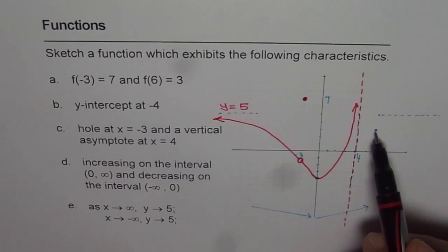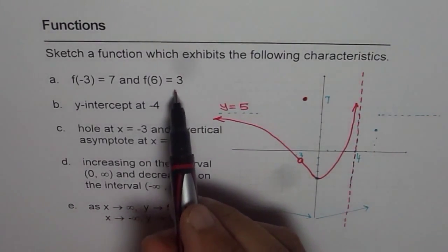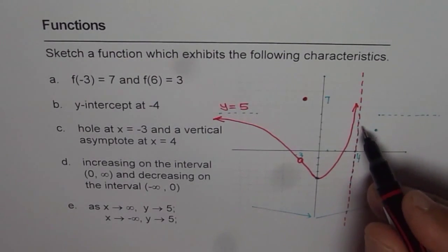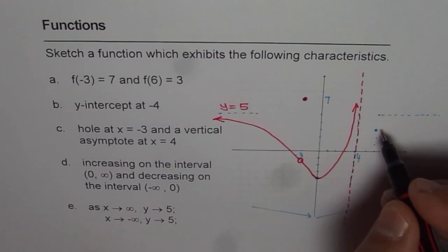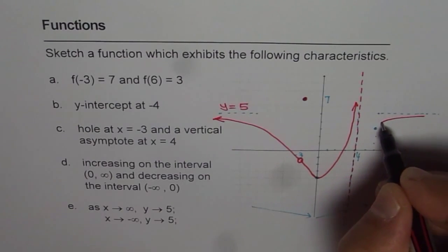Now we have to take care of f of 6 as 3, and on the right side of the vertical asymptote, we need a function which is always increasing, correct? So we can do that very easily by drawing like this, right?